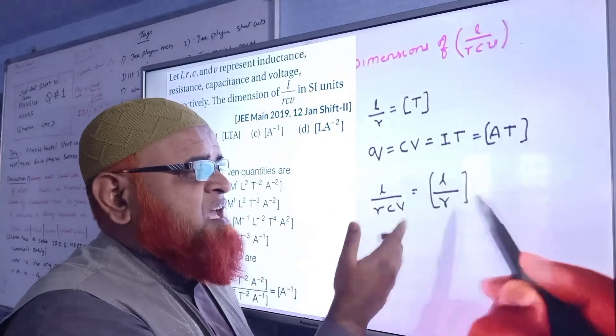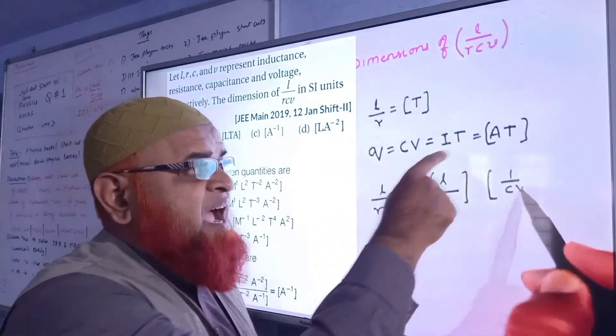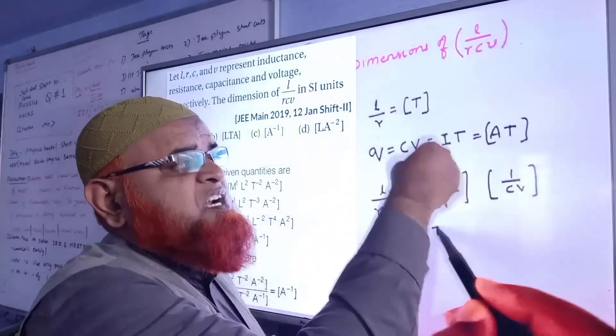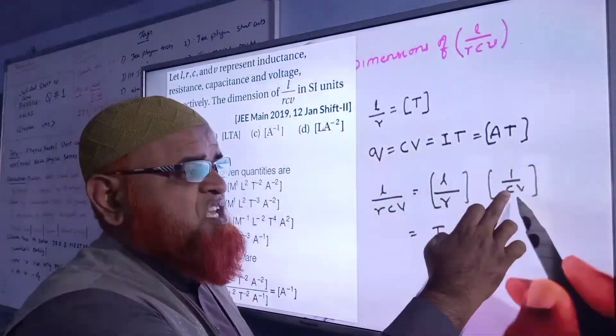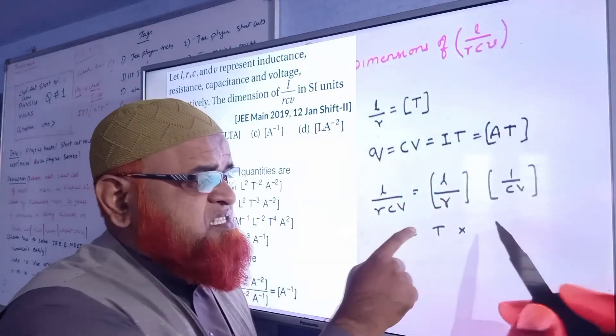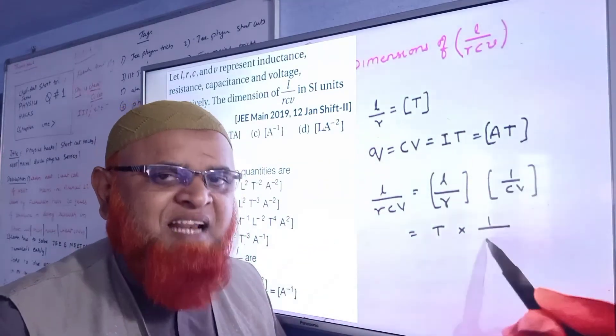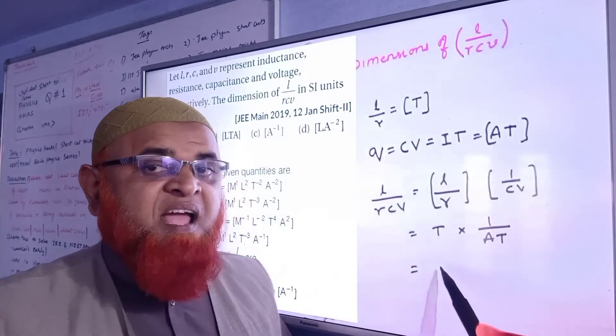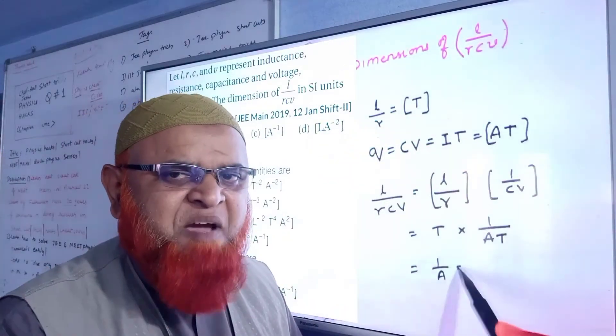So it's very simple. Instead of L/(RCV), L/R is represented with T and Q is represented with CV. CV is represented with AT. T gets cancelled and what is left here is only A. So 1/A is nothing but A⁻¹. It's a very amazing trick, no need to remember any dimensional formulas.